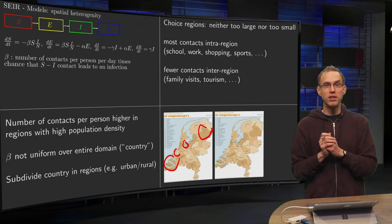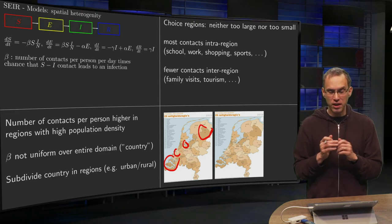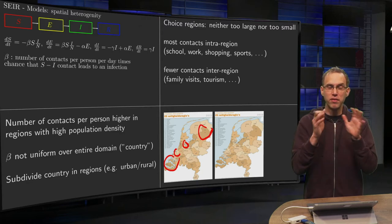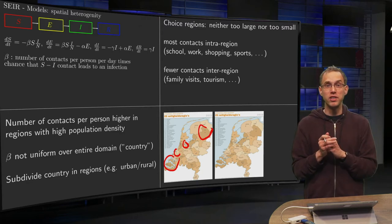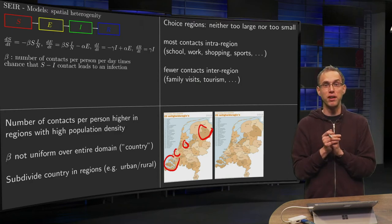By the way, those regions are the so-called security regions. They are defined, they are given in some way. And a nice point is that all kinds of data are already available on those 25 regions. So that is why this would be a good choice.